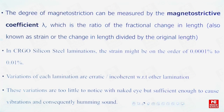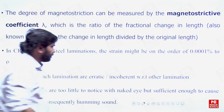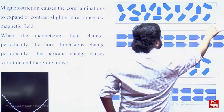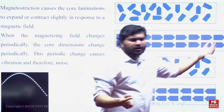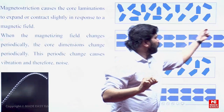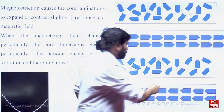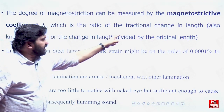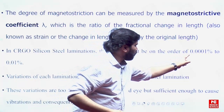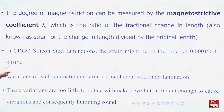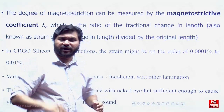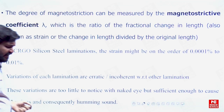The degree of magnetostriction can be measured by the magnetostrictive coefficient lambda. Imagine delta L is the small extension because of magnetostriction, and L is the original length. The magnetostriction coefficient is delta L divided by original length L. This is the coefficient to measure magnetostriction — the ratio of fractional change in length to original length. It is a very tiny thing, in the order of 0.0001% to 0.01%. These variations are erratic and incoherent — they can be widthwise, lengthwise, everywhere — very little to notice.